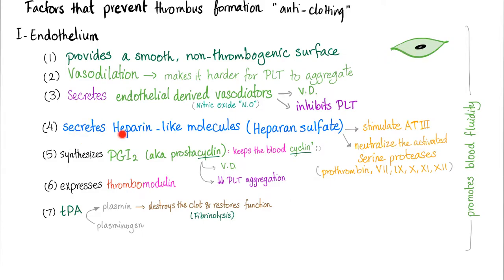The endothelium secretes heparin-like molecules called heparan sulfate, which stimulates antithrombin-3. Antithrombin-3 neutralizes the activated serine proteases such as prothrombin and factors 7, 9, 10, 11, and 12.